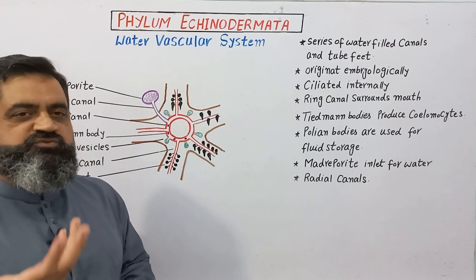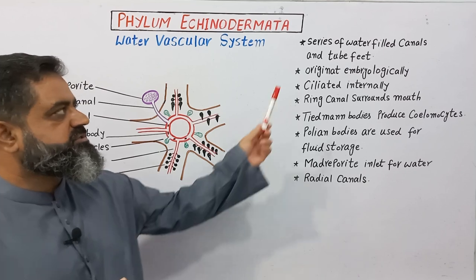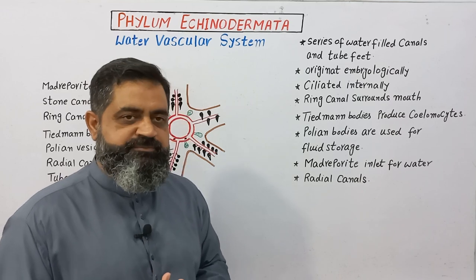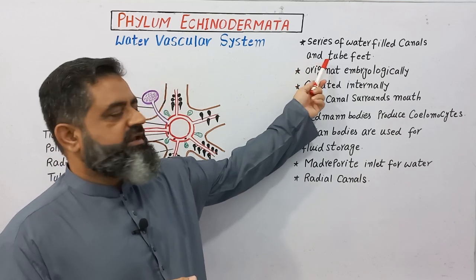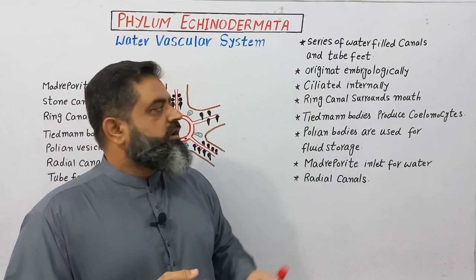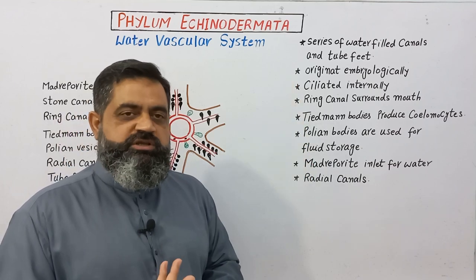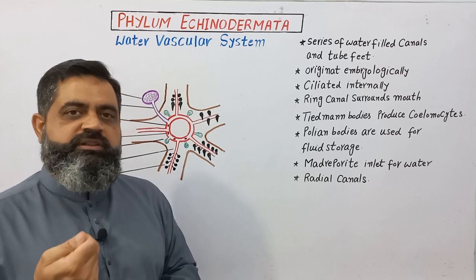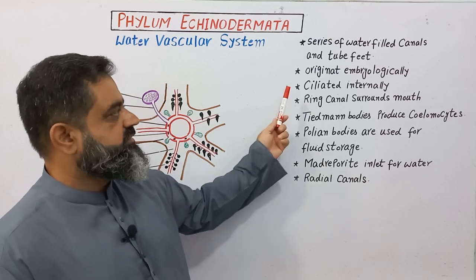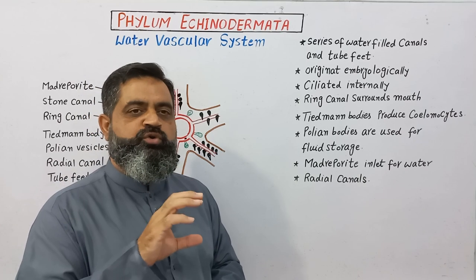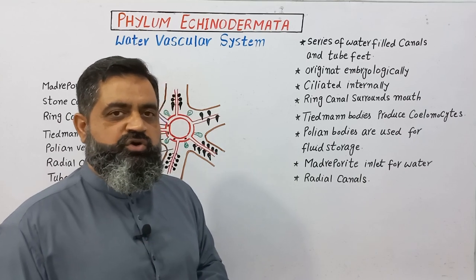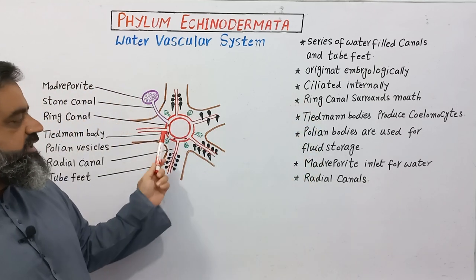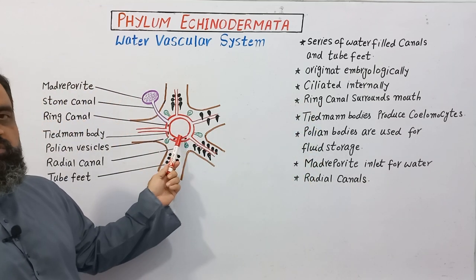Point one: what is the water vascular system? The water vascular system is a series of water-filled canals, usually five or a multiple of five, that end in tube feet. This system originates embryologically, meaning it begins to build during the embryonic life of the animal. It is ciliated internally to control the movement of water across these tubes. The ring canal surrounds the mouth, as shown in the diagram.